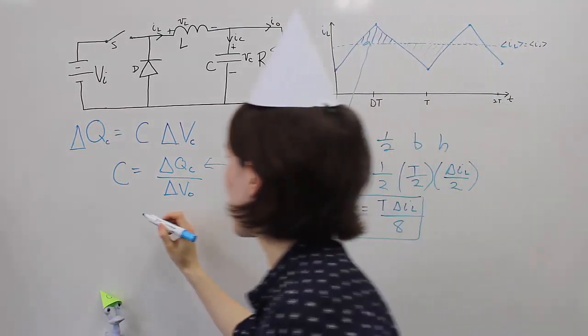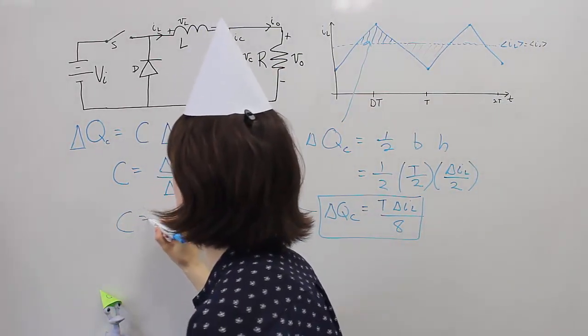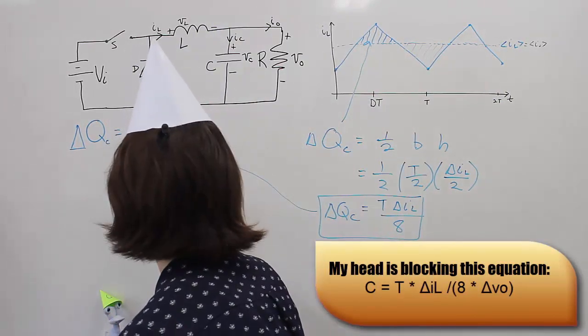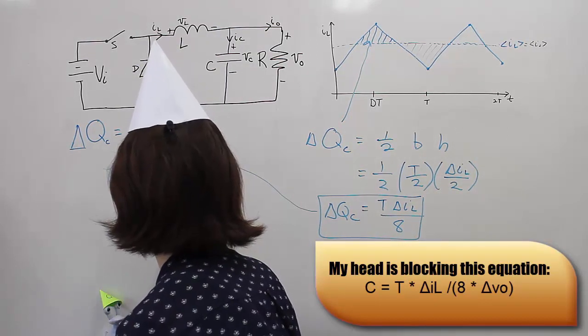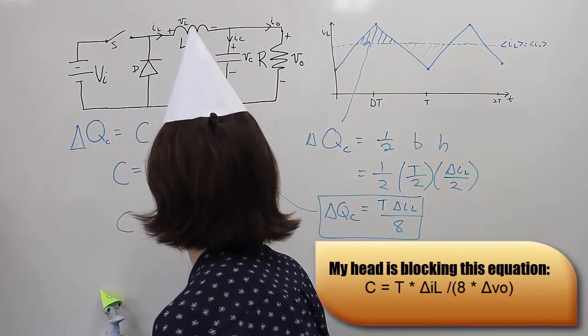And we will get the capacitance value must be equal to T delta IL, the ripple of the inductor, divided by 8 times the change in the output.